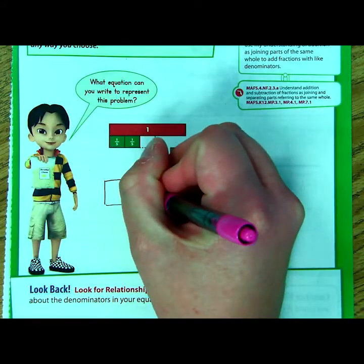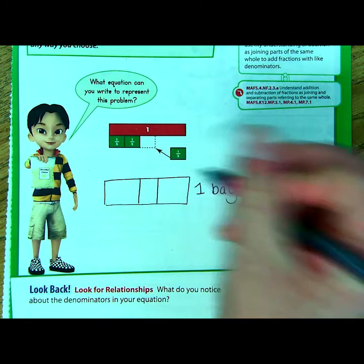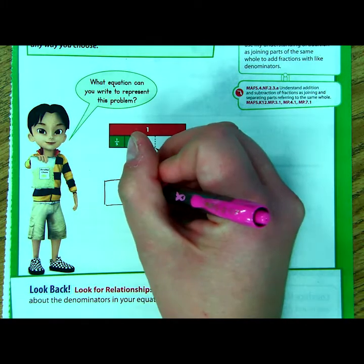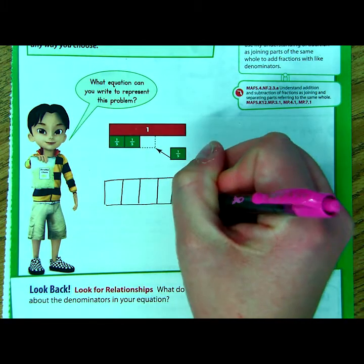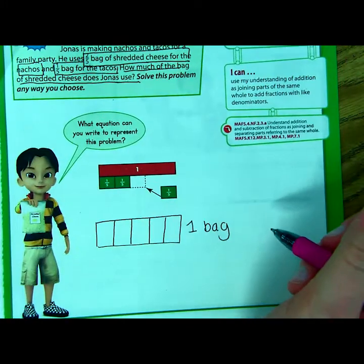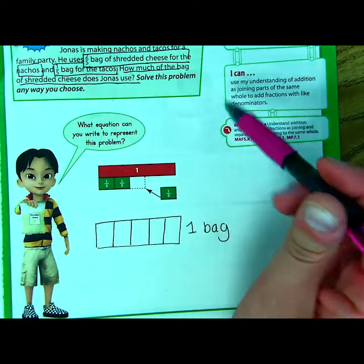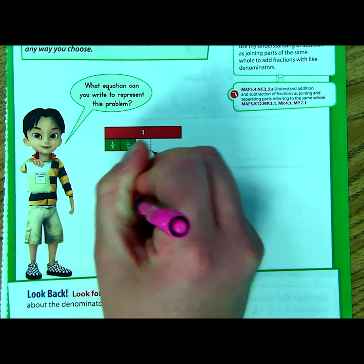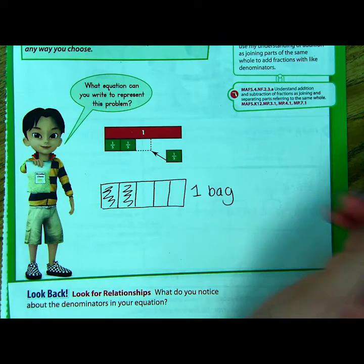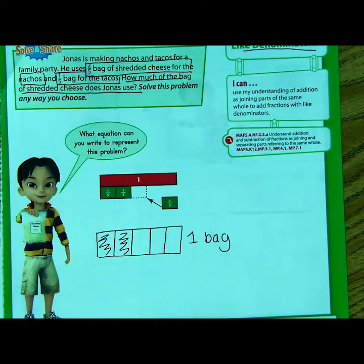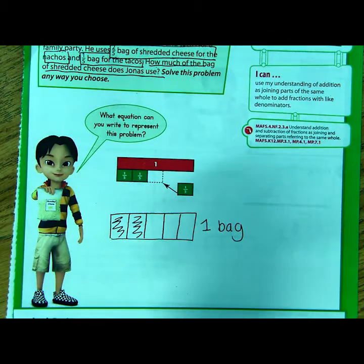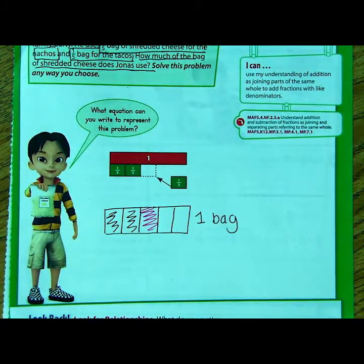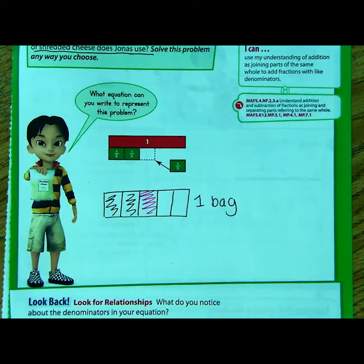So fifths is fun to create. You kind of do like a square in the middle there, and then cut these last two pieces. Now, if I go back, it says he used two-fifths of the bag for nachos. So this is going to be nachos. And then he uses one-fifth of the bag for tacos. Tacos.